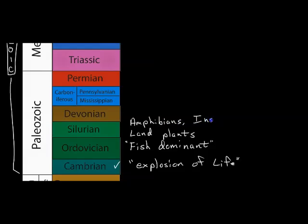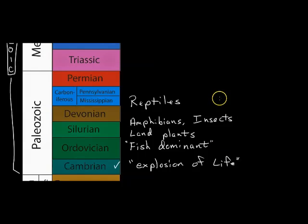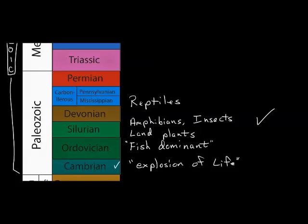After amphibians came insects, and then finally reptiles. All of the different animal phyla that we have currently were first developed during the Paleozoic. It was just a huge amount of life created during this period of geologic time, and other sources will call it the age of fish.